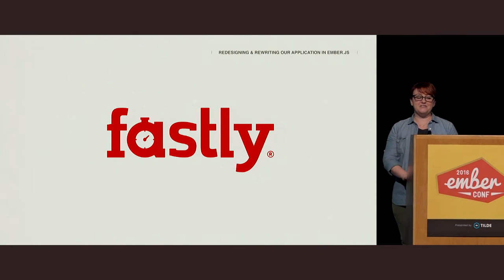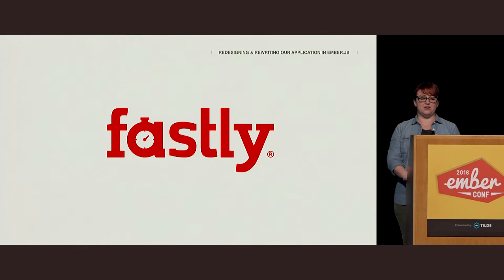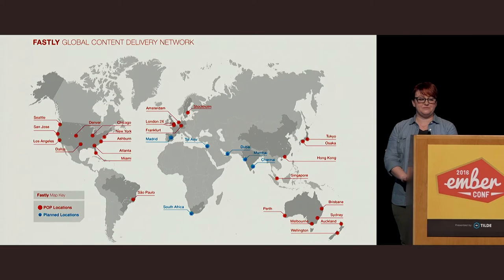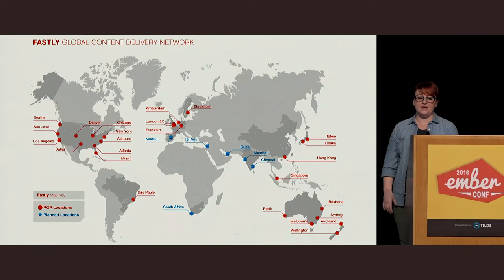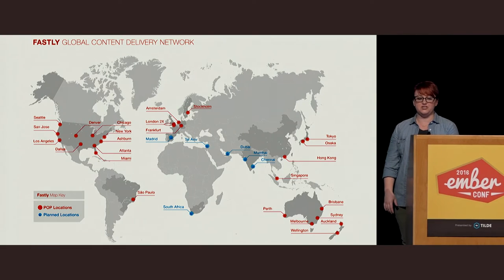I work for Fastly, which is a real-time content delivery network, and I am a software engineer on our user experience team. Fastly is a global CDN with caches all around the world, as you can see on this map, and our global network is built in Varnish, which is an open-source cache control language.